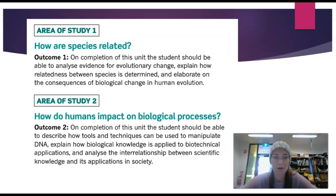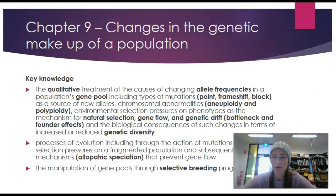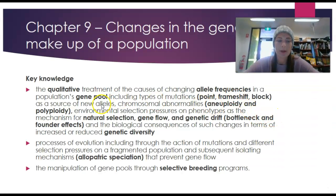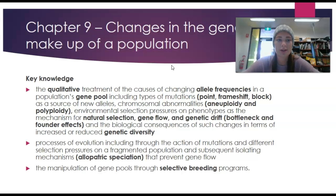Unit 4 is very much an evolution-guided study. We're looking at how species are related in Area of Study 1, and then we move on to looking more specifically at humans in human evolution and our impact on the evolution of other species in Area of Study 2.